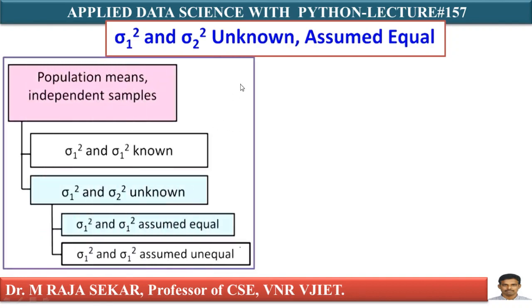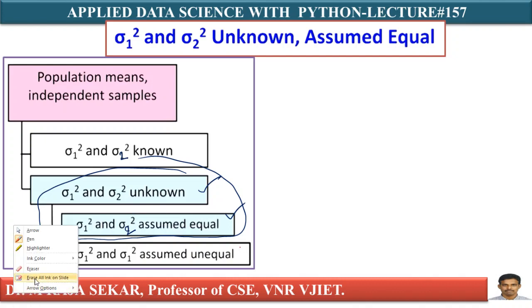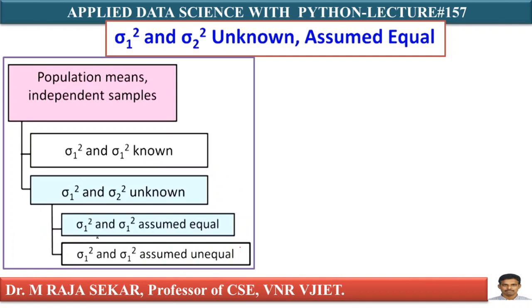Before understanding a simple problem, let me discuss a few theoretical points. In my previous lecture, I discussed the case where Sigma1 square and Sigma2 square are known. But in this lecture, I must discuss the case where Sigma1 square and Sigma2 square are unknown but assumed to be equal.